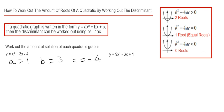Our discriminant is b squared minus 4 times a times c. So 3 squared is 9, and minus 4 times 1 is minus 4, times minus 4 is plus 16.